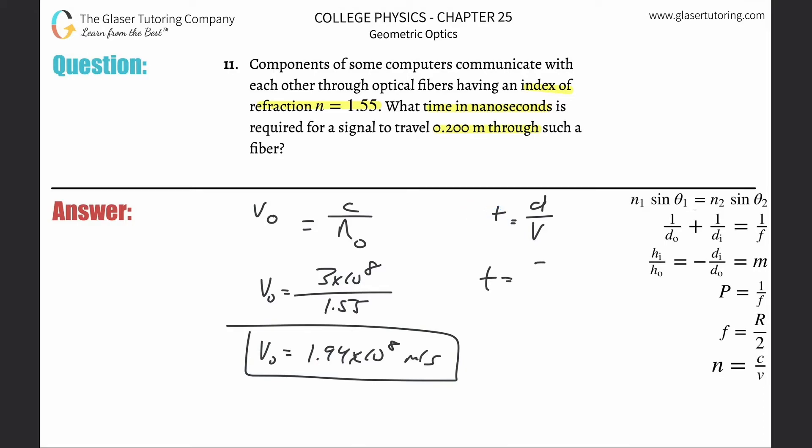I got my t equal to the distance, 0.2 meters. I got my meters per second down here, that's fine. 1.94 times 10 to the 8.